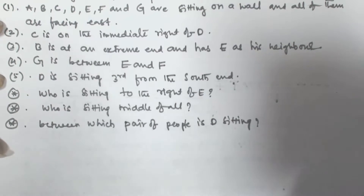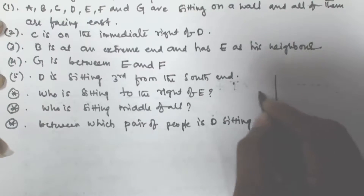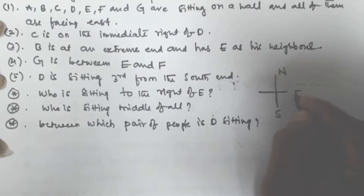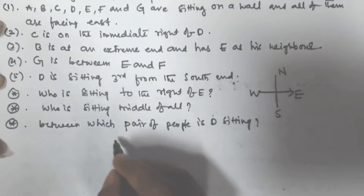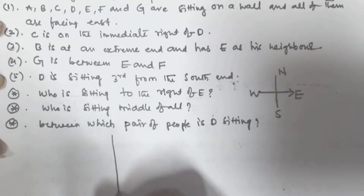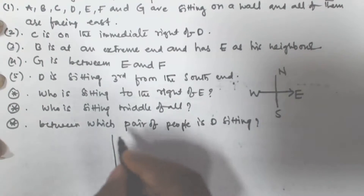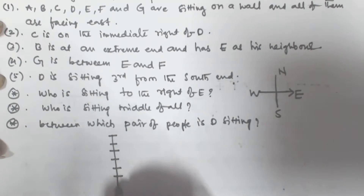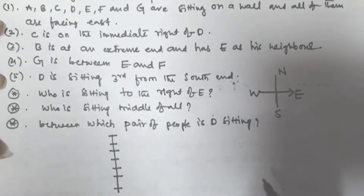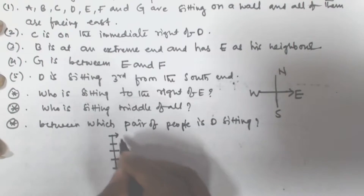Now we have to establish the sitting positions for all of them on the wall. If you see the basic directions, this is north, this is south, this is east, and this is west. All of them are facing east, so let us assume this is the wall and the seven persons are sitting: one, two, three, four, five, six and seven.